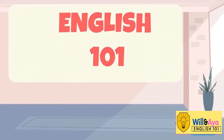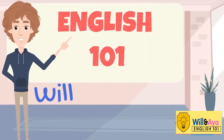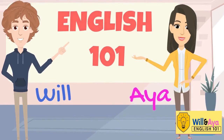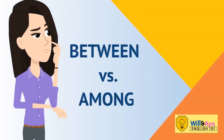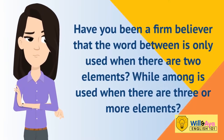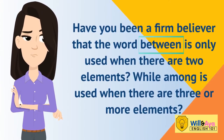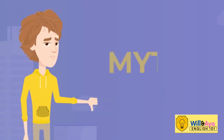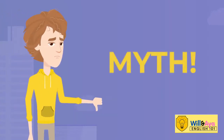Welcome to English 101 with Will and Aya. Have you been a firm believer that the word 'between' is only used when there are two elements, while 'among' is used when there are three or more elements? Well, actually that rule is a myth. It is a great oversimplification.